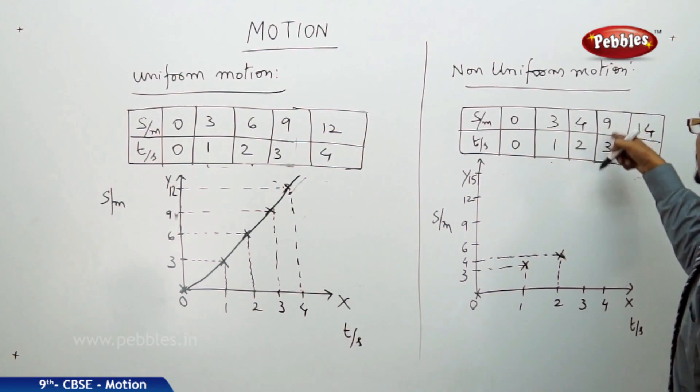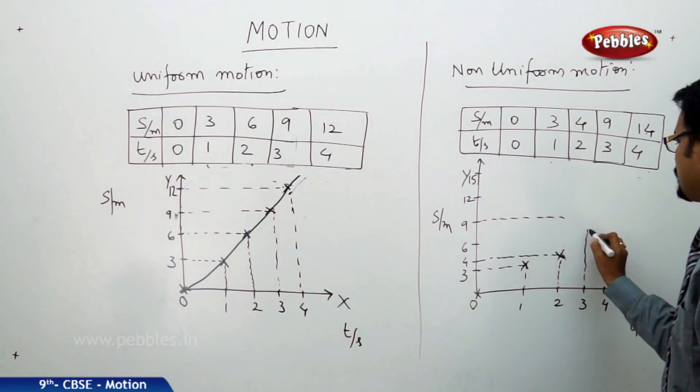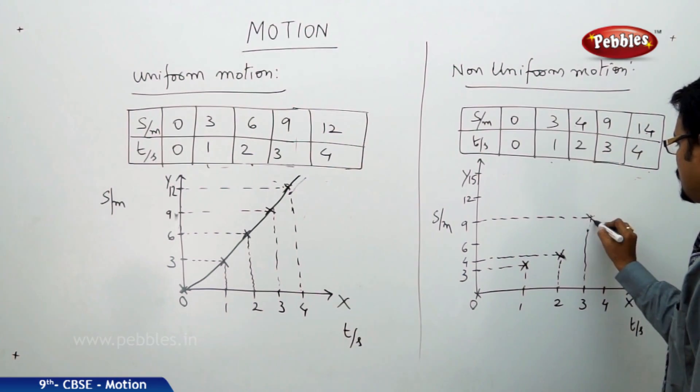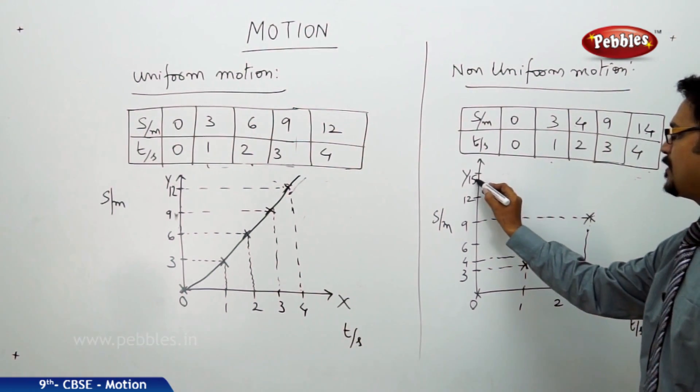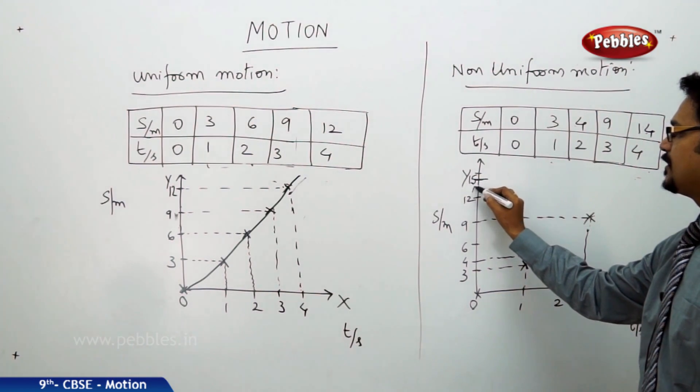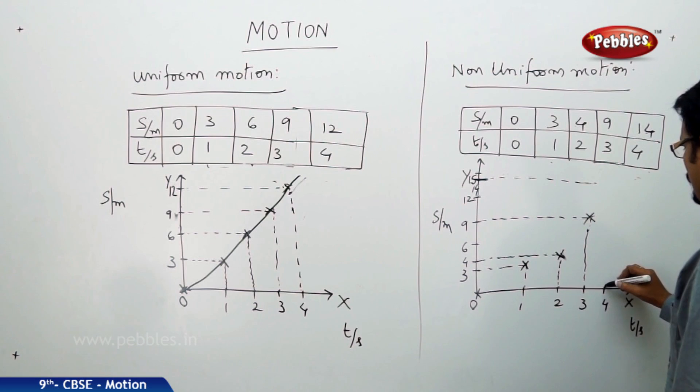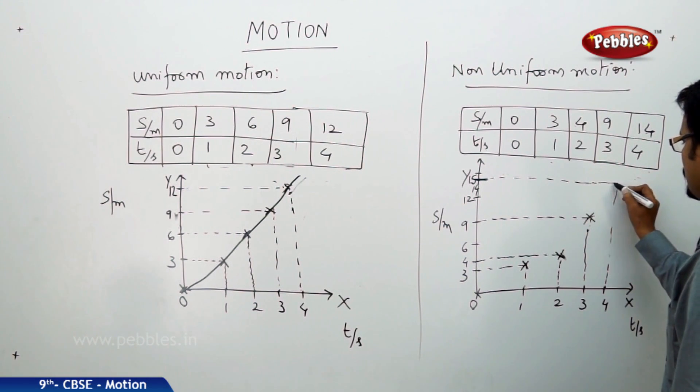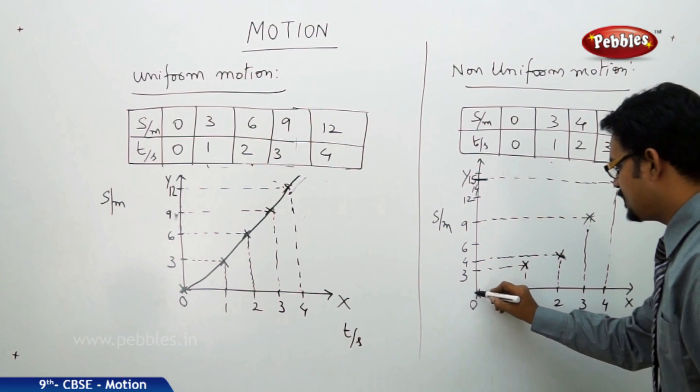Let me plot here. 4 meters. 3 seconds is 9 meters. 3 seconds. This is 9. 3 seconds. Plot it. 9 meters. 4 seconds, 14 meters. 14 comes here. This is 14. 14 here. So, 4 seconds. This is the plotted, approximately. Now, if you join the points. If you observe carefully.